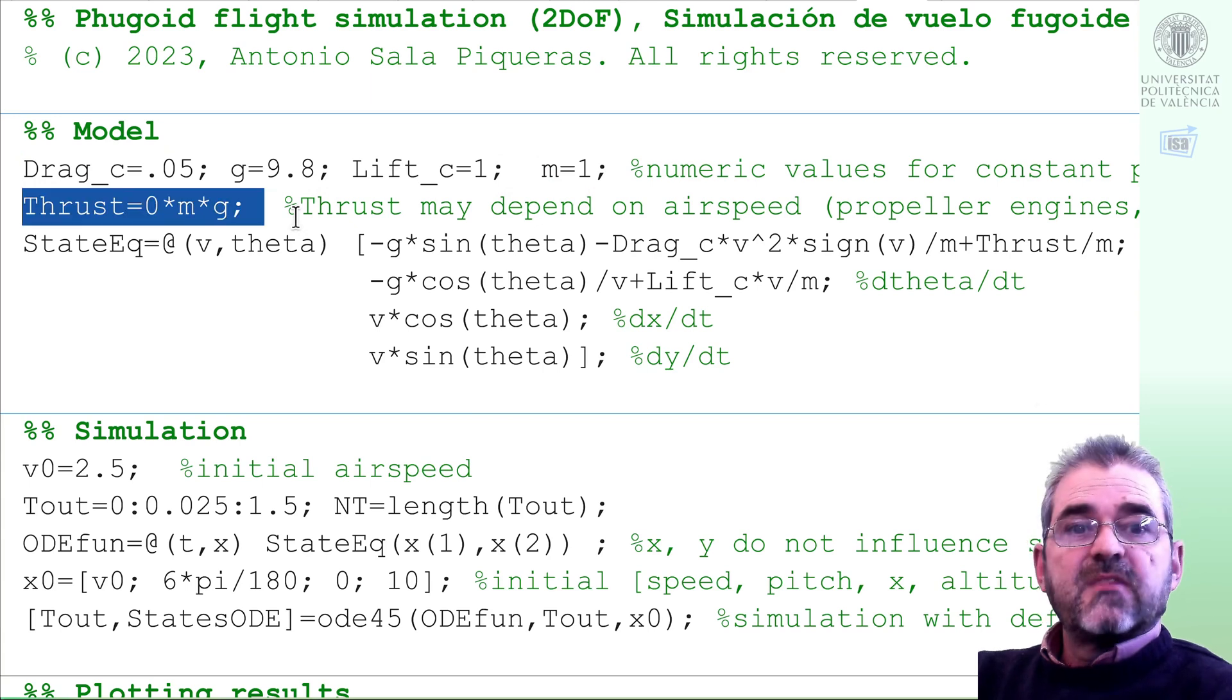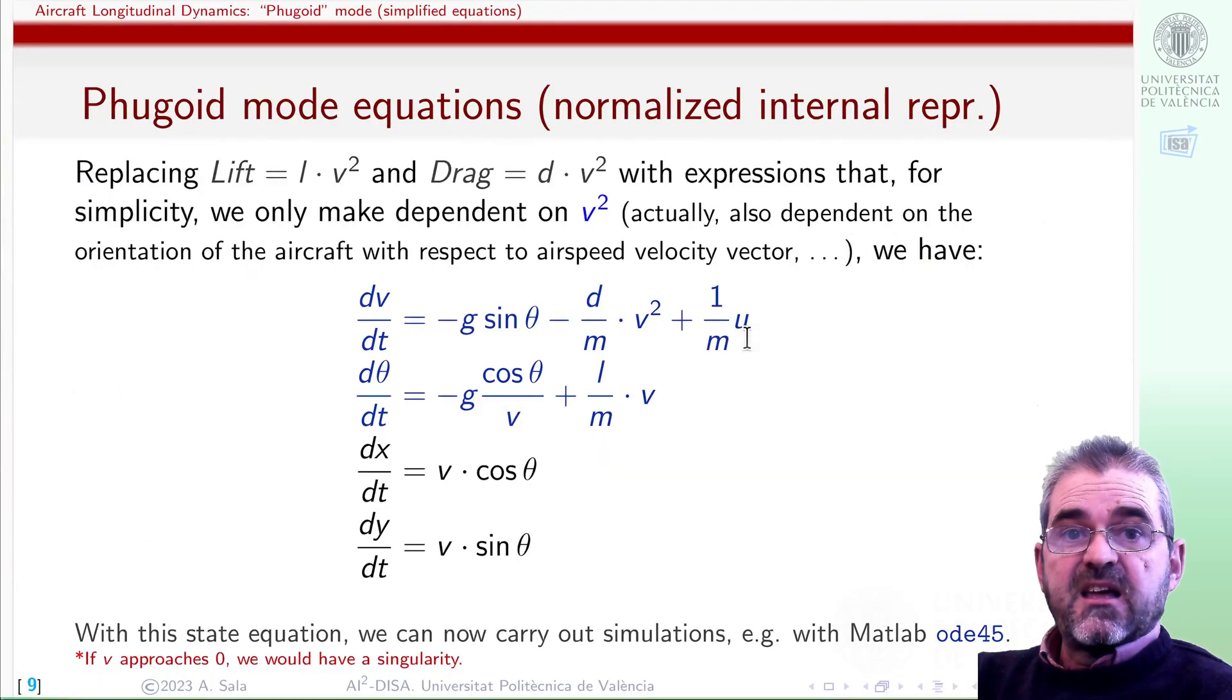We will also indicate which is the thrust, which we will assume it to be constant, even this u may have velocity-dependent terms, for instance, in fixed power propeller planes. But we are dismissing that stuff in here to keep things simple.